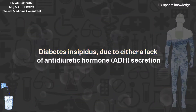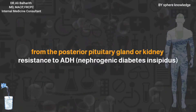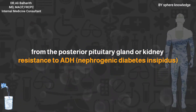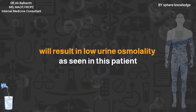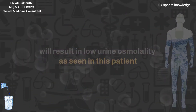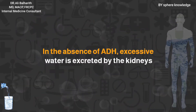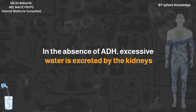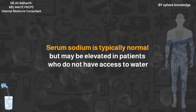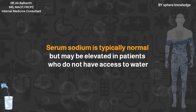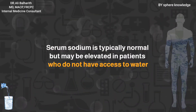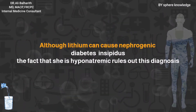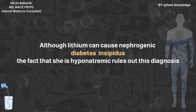Diabetes insipidus, due to either lack of ADH secretion from the posterior pituitary gland or kidney resistance to ADH (nephrogenic diabetes insipidus), will result in low urinary osmolarity as seen in this patient. In the absence of ADH, excessive water is excreted by the kidneys. Serum sodium is typically normal but may be elevated in patients who do not have access to water. Although lithium can cause nephrogenic diabetes insipidus, the fact that she is hyponatremic rules out this diagnosis.